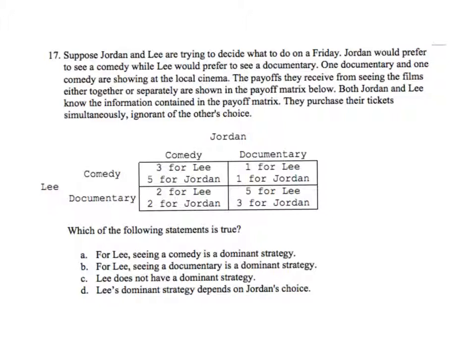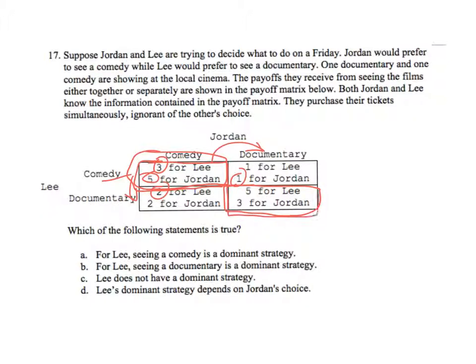Notice we've got two Nash equilibria. Notice that both being at a comedy: if Lee is at a comedy, does Jordan want to go over to the documentary? No, because five is better than one. Does Lee want to skip out of the comedy and go over to the documentary? No, because three from going to the comedy is better than two from the documentary. So this is a Nash equilibrium, and it turns out there's another one. In these matching games there are typically two Nash equilibria in a two-by-two game.